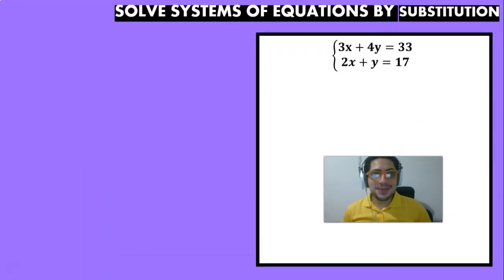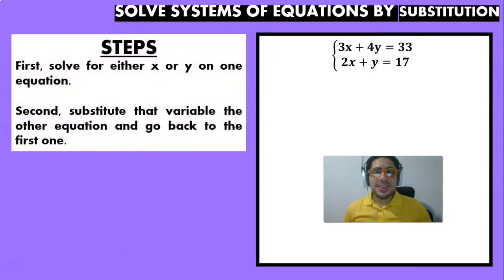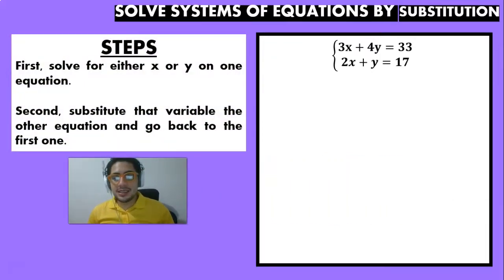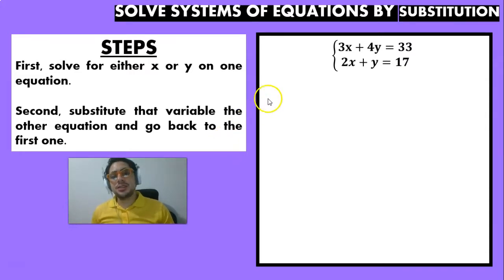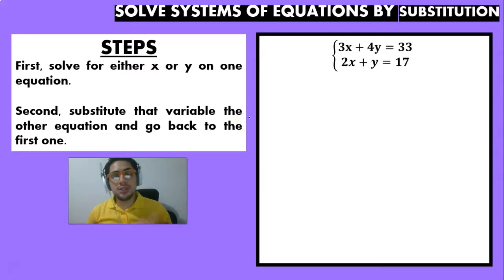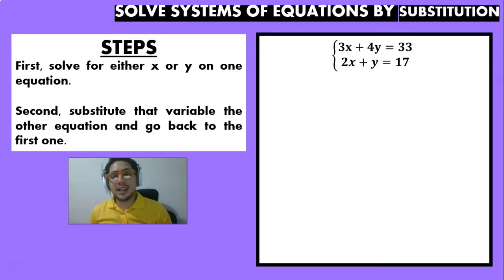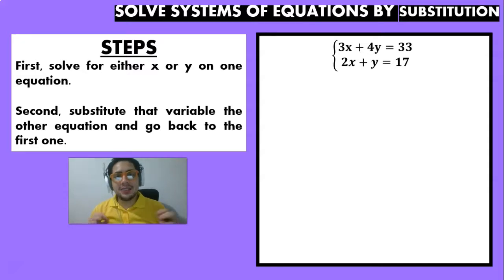Let's begin. The first thing we have to take into account are the basic steps we're going to follow whenever we are solving a system of equations by substitution. The first thing you have to do is solve for x or for y — you are the one that's going to choose that, on one of the two equations. You choose the equation and you choose if you want to solve for x or y. The important thing is that you're going to isolate that variable.